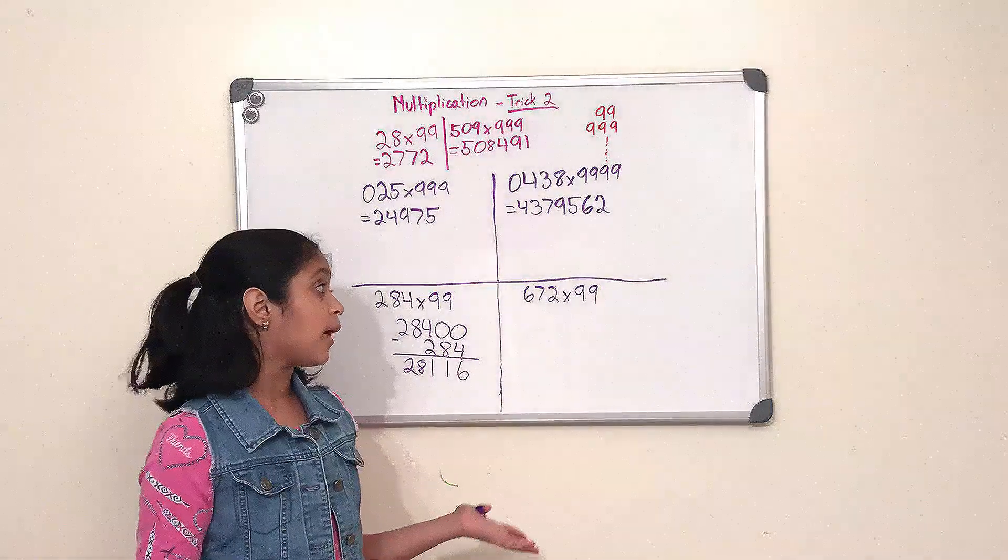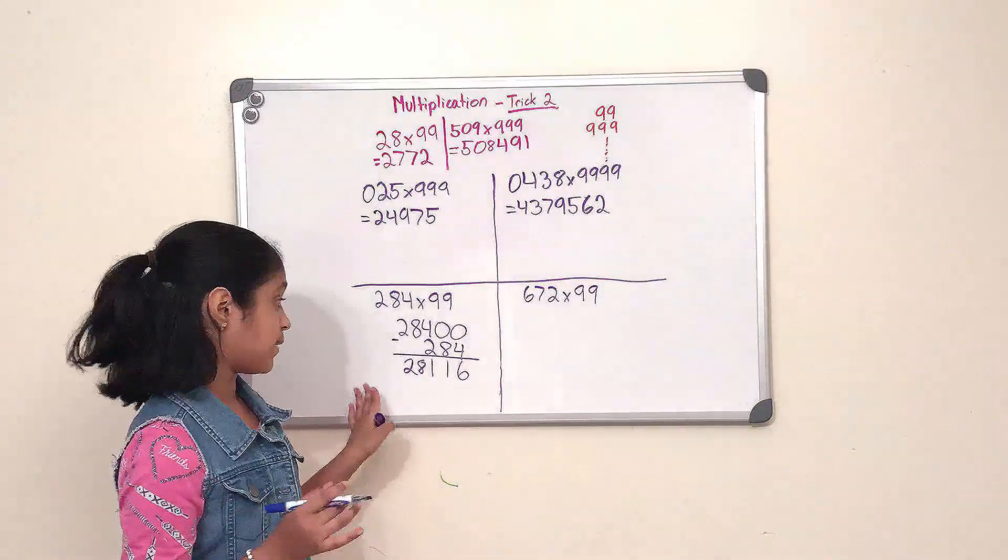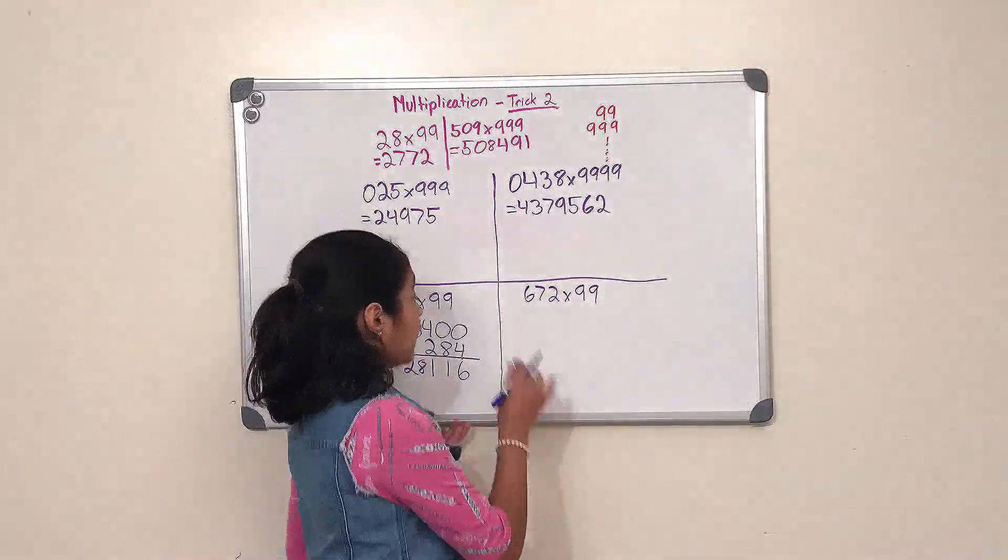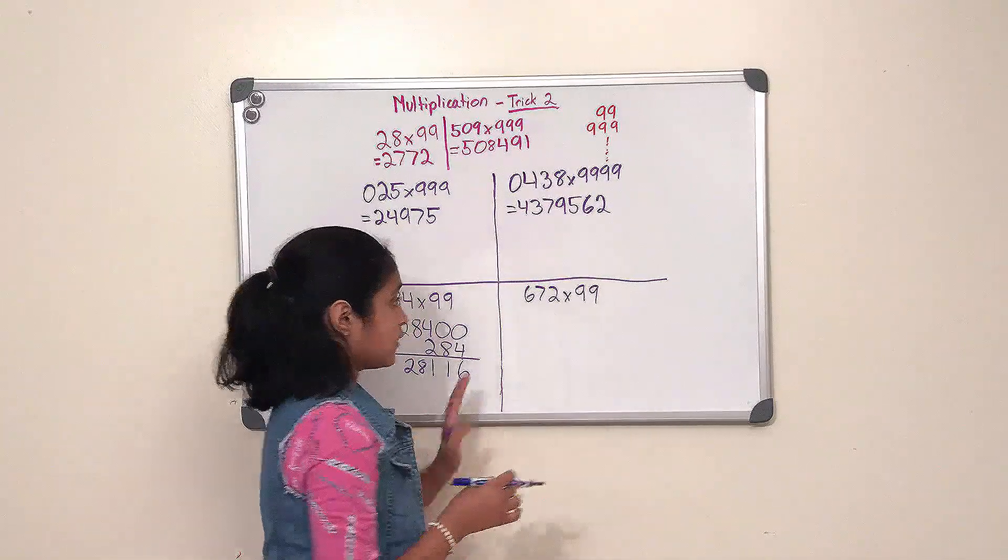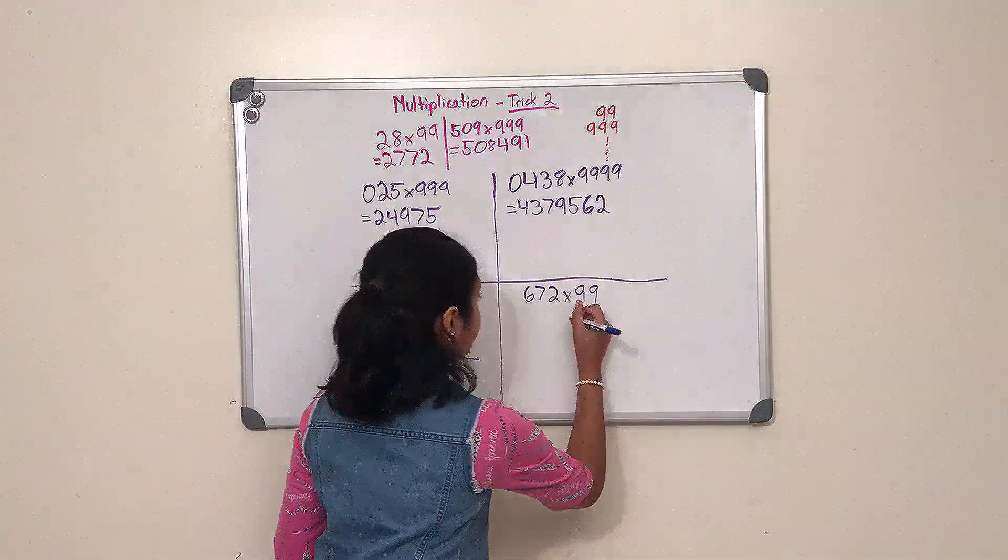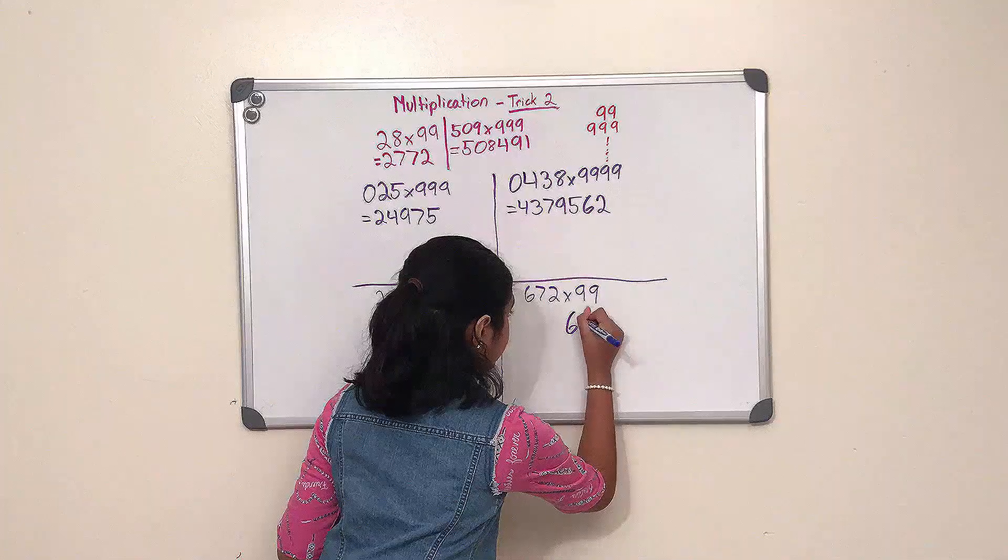So now we have to add two zeros after 672, so it's ready like this. So we added the two zeros, now we have to subtract 672 from this number, just like so.